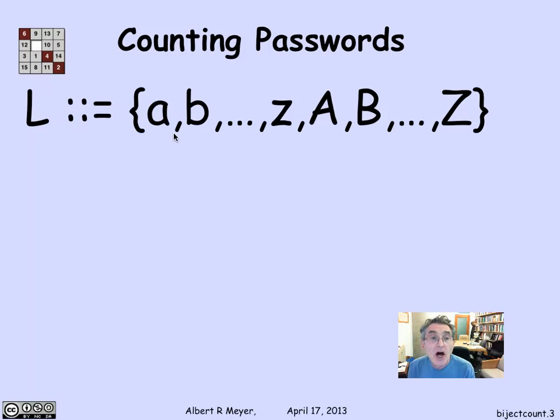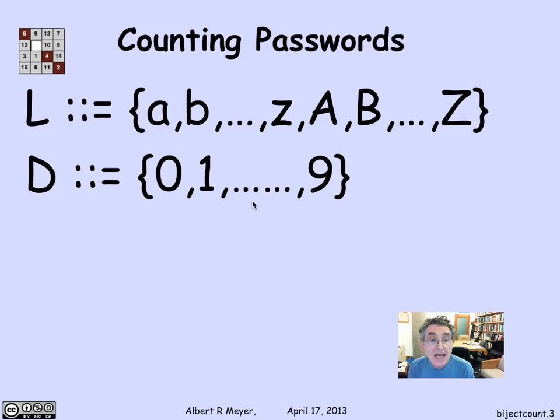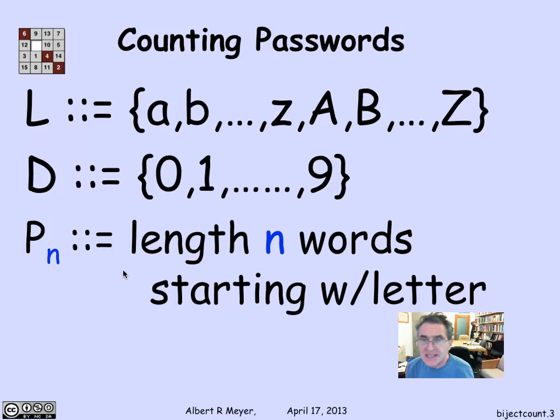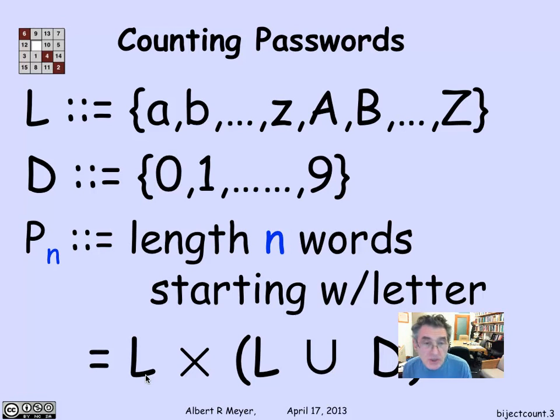So let's define the set L of all the letters, uppercase and lowercase, together, and let D be the set of digits from 0 through 9. Then we said that passwords are supposed to be between six and eight words long, but it's a little bit easier actually to just use length as a parameter. So let's think about words of length n that satisfy the password conditions. So Pn is going to be the length n words starting with a letter. We can express that as a length n word can be broken up into the first character, which is an L, paired with the rest of the word, the remaining n minus 1 characters. The remaining n minus 1 characters can be either L's or D's. So the length n passwords can be expressed as the product of L with the nth power of L union D.